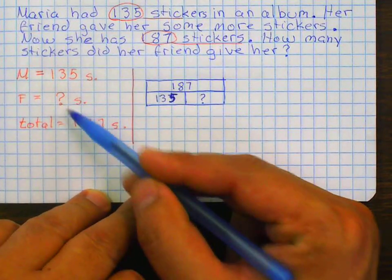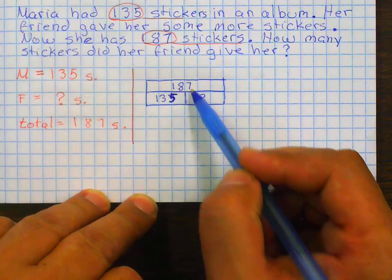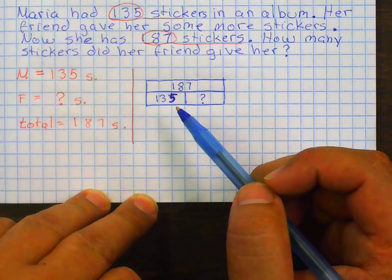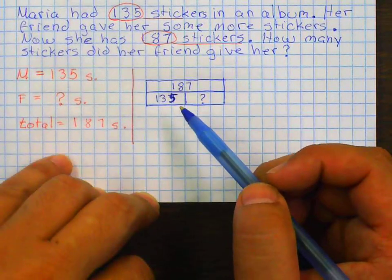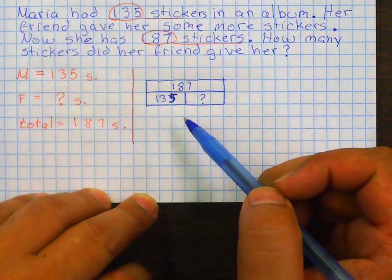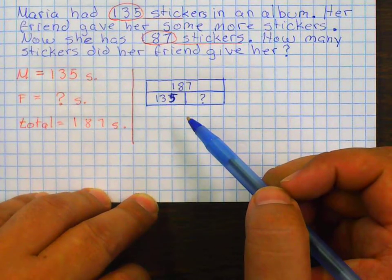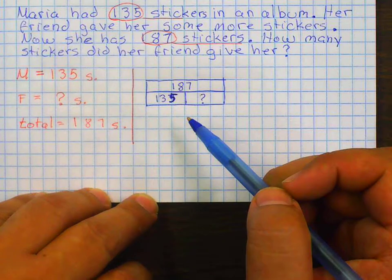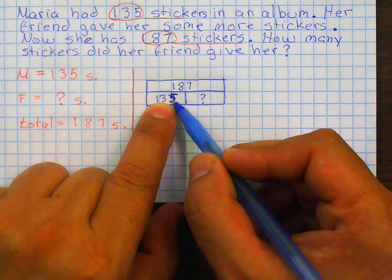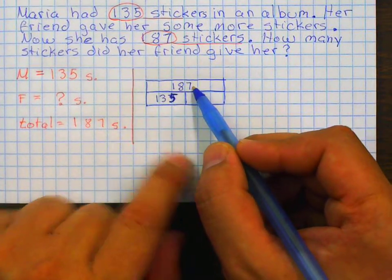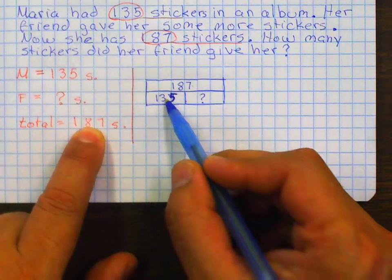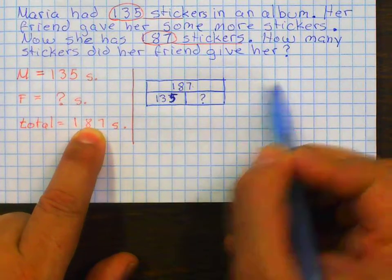Think about it in these terms, why I cannot add 135 plus 187? The reason why I cannot add 187 plus 135, it's because 187 is my total. It's all that she has. So if I add this, that's going to be a lot more than what she has in all. I cannot add these two because one is my total.